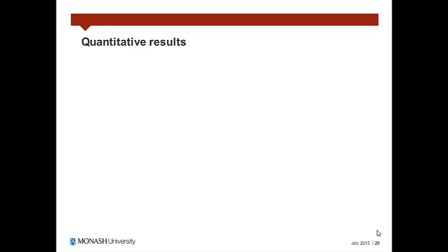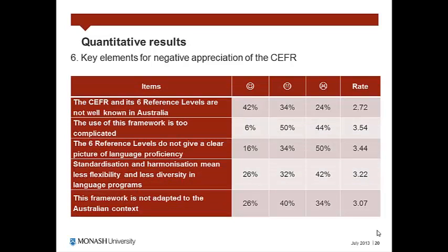On the same principle, the following question was designed to analyse the reasons for a potential rejection of the CFR. Actually, 42% of the participants recognised that the negative perception of the CFR and the six levels scale in Australia is due to limited knowledge in the country. At the opposite, they mainly did not think that the CFR is refused because this framework is too complicated or does not give a clear picture of language proficiency. Moreover, a majority of them also declined the idea that standardisation and harmonisation mean less flexibility and less diversity in language programmes. Finally, a greater indecision emerged regarding whether the CFR is not adapted to the Australian context.